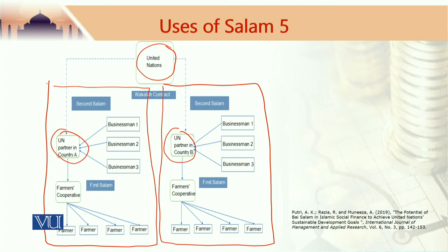In one of the previous modules we mentioned a structure proposed for Afghanistan — that was a national commodity platform. This can become a global commodity platform supported by an organization like the United Nations or the United Nations Development Programme. Actually, if ITFC — the Islamic Trade Finance Corporation, a subsidiary of the Islamic Development Bank — adopts this model for promoting trade and fair prices in the member countries of the OIC and Islamic Development Bank, this would be a very good step.